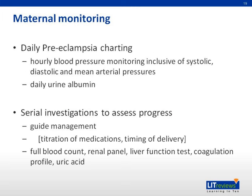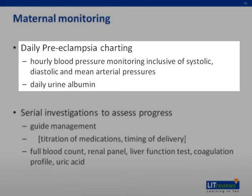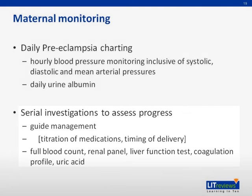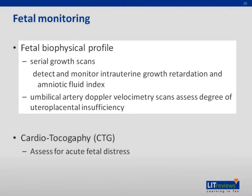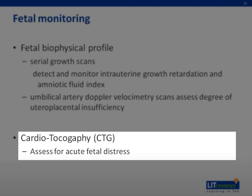There should be conscientious maternal and fetal monitoring at all times. Maternal monitoring includes a daily preeclampsia chart where blood pressures are monitored every hour, including systolic, diastolic, and mean arterial pressures. Daily urine albumin should also be performed. Serial hematological investigations should be performed to assess progress and guide management, including full blood count, renal panel, liver function test, coagulation profile, and uric acid. Fetal monitoring includes fetal biophysical profile monitored with serial growth scans to detect intrauterine growth retardation and the amniotic fluid index. Cardiotocographs may help detect any acute fetal distress.